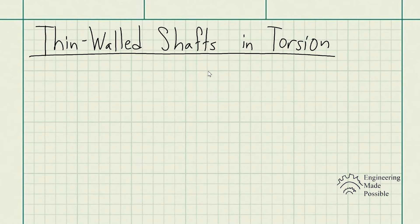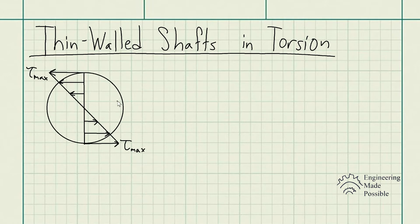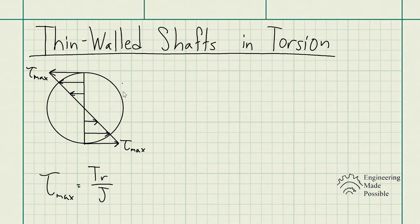Today we're going to be going over thin-walled shafts in torsion. Up to this point we've been going over torsion for different cross-sectional areas of solid shafts. Here's a circular shaft in torsion with the shear stress distribution across the diameter. The maximum shear stress is at the surface of this shaft, and the equation for it is the torque times the radius divided by the polar moment of inertia.